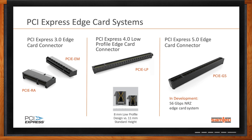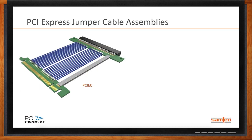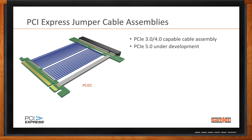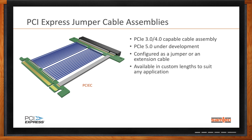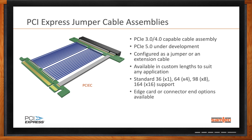Our jumper cable assemblies are probably our second most popular product for PCIe performance. We currently have solutions supporting PCIe 3.0 and 4.0, and are actively working on PCIe 5.0. These cable assemblies can be configured as a jumper or as an extension cable, and work really well when debugging add-in cards in a development or test environment. We also see customers using them to run PCIe signals from card to card in multi-PCB systems. They're available in custom lengths and support standard lane counts: x1, x4, x8, and x16.